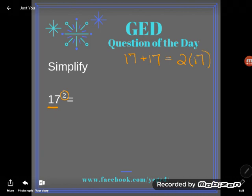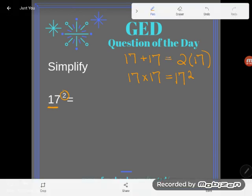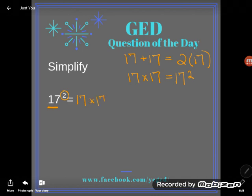We also have a shortcut way of talking about repeated multiplication. 17 times 17 can be written as 17 squared. So 17 squared or 17 to the second power means the number 17 multiplying by itself, or two 17s multiplying.